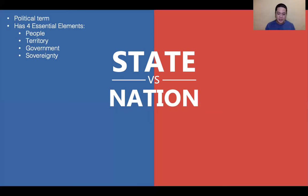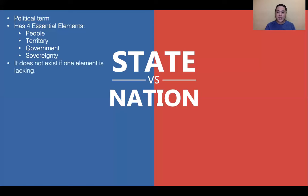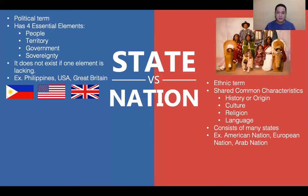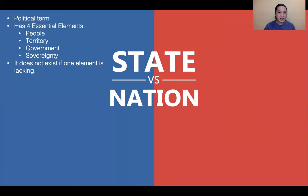Next is government — this is the agency through which the will of the state is formulated. The people lead the government; the people are the government. Next is sovereignty, which may be defined as the supreme power of the state. Even if you have people, territory, and government, without power you don't exist as a state.